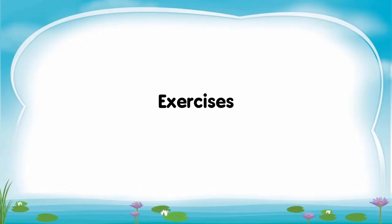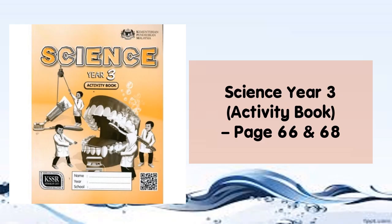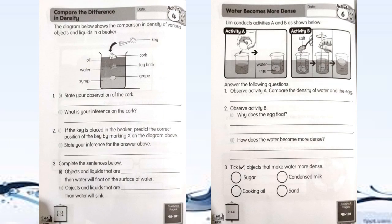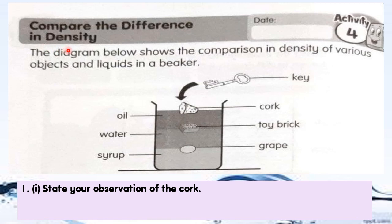Now it's time to do some exercises. Please get ready your Science Year 3 activity book and turn to page 66 and 68. Today's exercises ask you to compare the difference in density. The diagram below shows the comparison in density of various objects and liquids in a beaker.